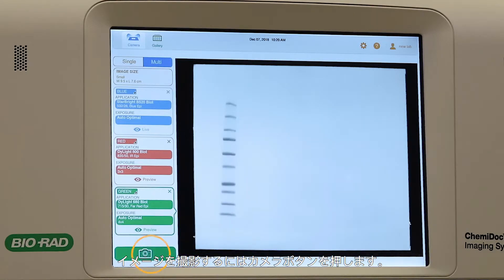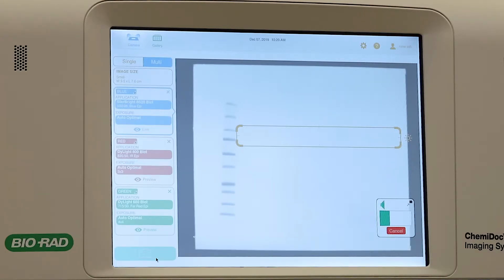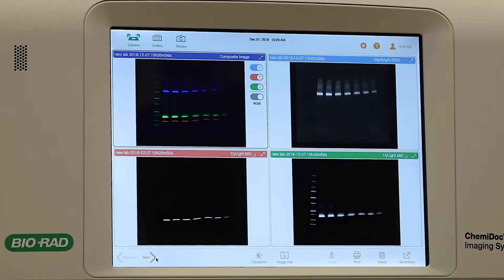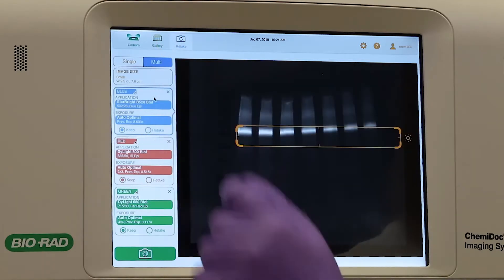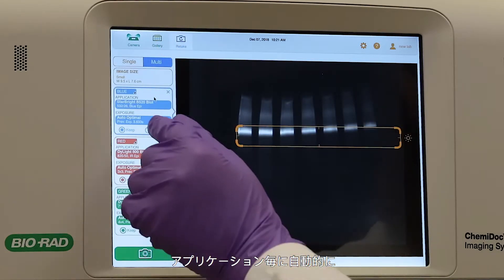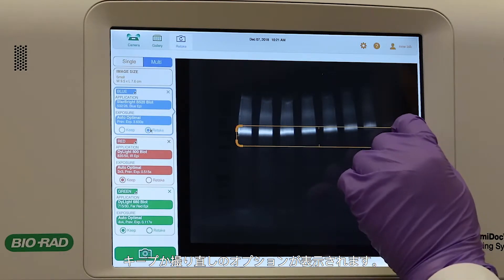Tap the camera button to capture the image. If you're not satisfied with your multiplex fluorescent image, tap the retake button. Note that each application automatically populates with the options Keep or Retake. Previous exposure times are also indicated.